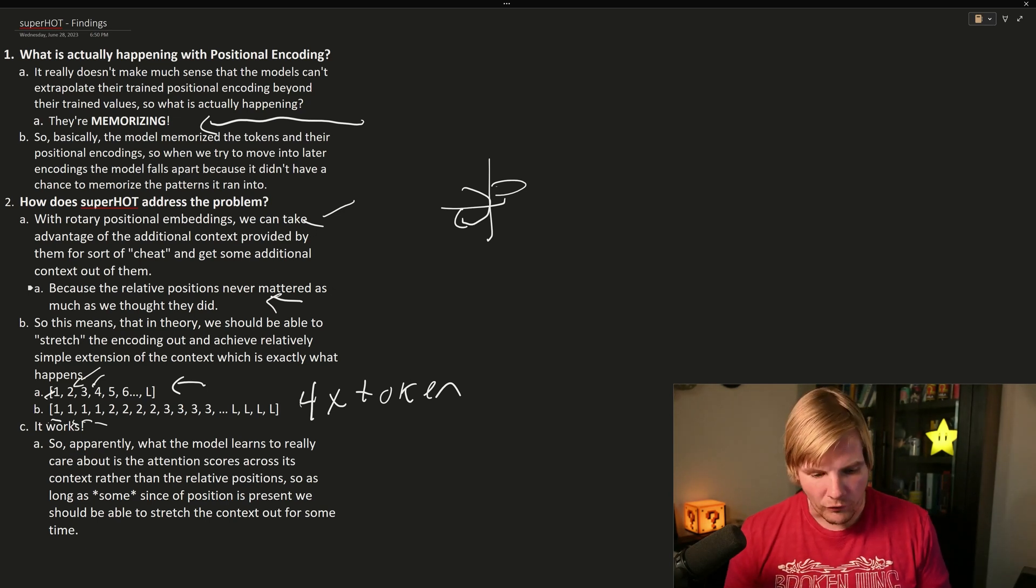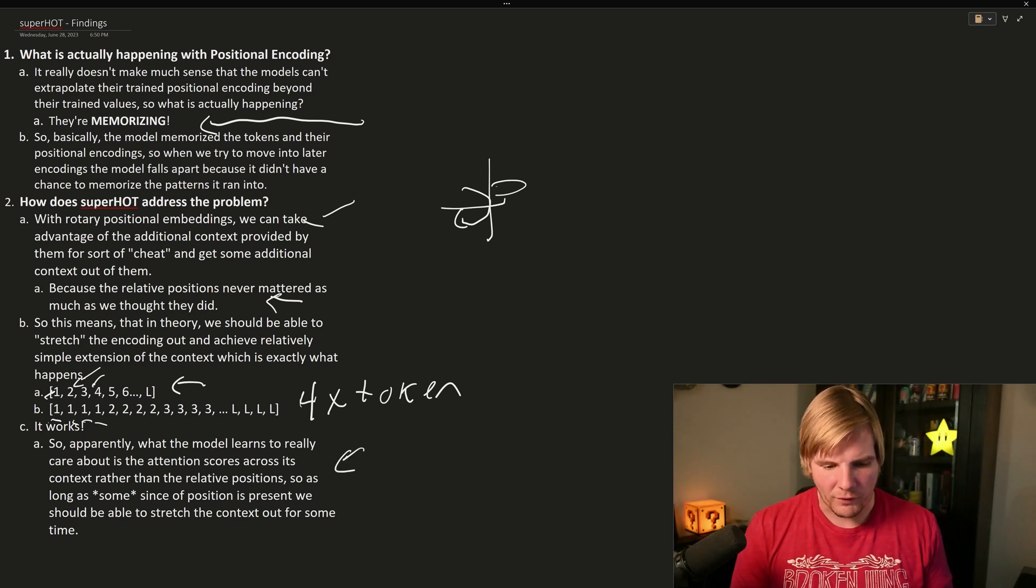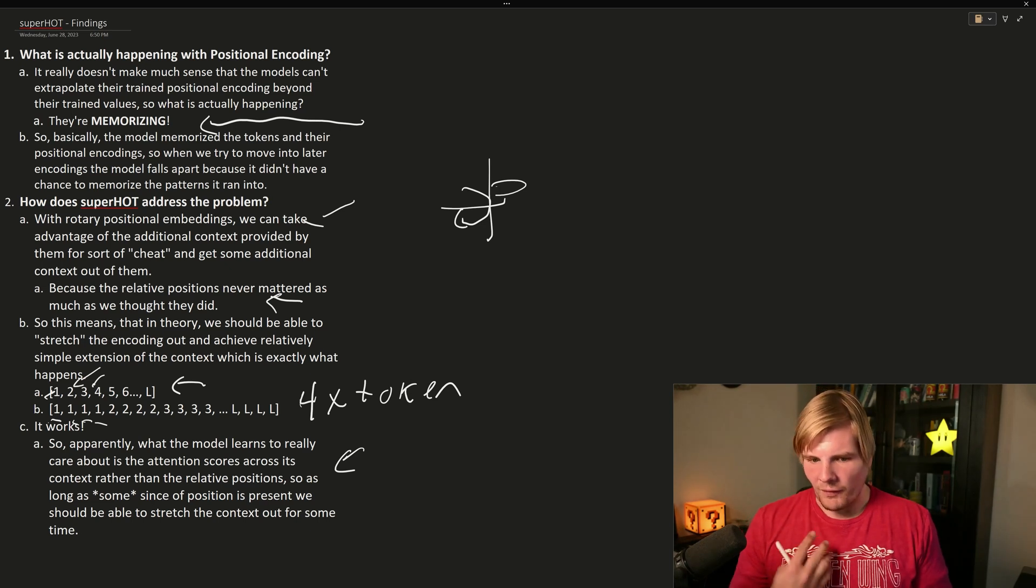So what ultimately matters is that there is some sense of positionality. And because of these rotary embeddings, we can take advantage of that for the model to still be able to understand the whole context. And that's how Superhot is really taking advantage of this to extend the token context well beyond what the model was trained for. And this is probably honestly how GPT is even doing this. And this does seem to work out to 16k or even 32k context. So this has been a very powerful change.